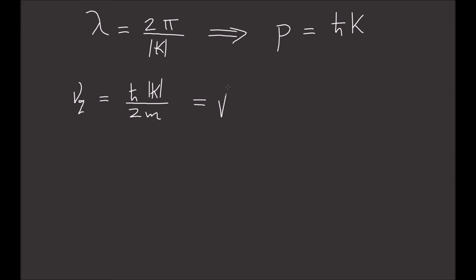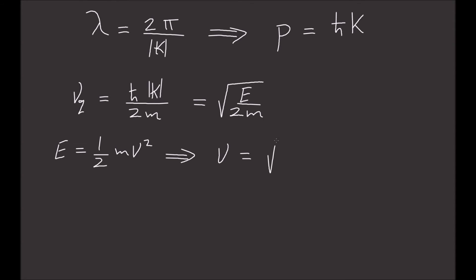With a little algebra, this is equal to the square root of E divided by 2m. We also know the kinetic energy is equal to one-half mass times velocity squared. Solving for velocity, we get nu sub c (for classical) equals the square root of 2E divided by m. If you look at the relation between the classical and quantum velocities, the classical velocity is twice as fast as the quantum velocity — meaning the particle is moving twice faster than the wave. This is a paradox we need to fix, but we'll come back to it.